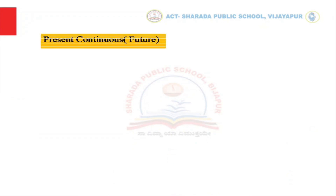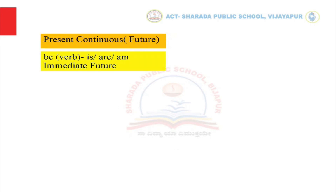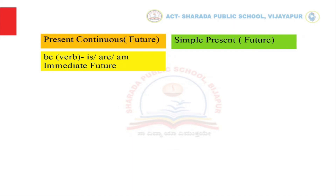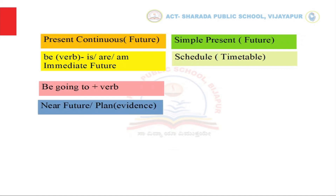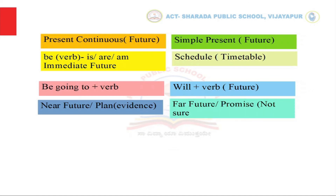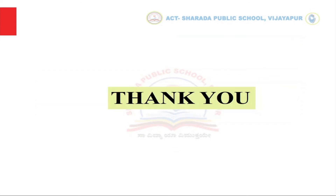To recap: there are four futures. Present continuous can be used for the future if it's very soon. Simple present can be used for the future if it's a routine or schedule. 'Be going to' is used for the near future when we have evidence and are pretty certain. 'Will' plus verb is used for the far future, for promises, or when we want to volunteer. So there you have it — four futures. Thank you.